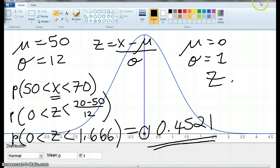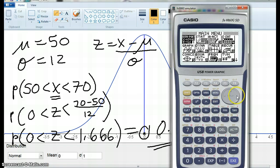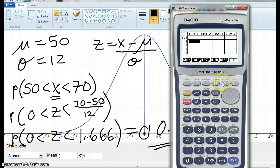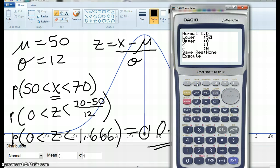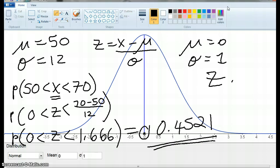Now I can test that we've got that correct by grabbing the calculator. I can go menus, stats, and distribution, normal distribution, MCD. My low is 50, my up is 70, my standard deviation is 12, and my mean is 50. The probability is 0.4522, 0.4521. It's a rounding error. So that's correct.